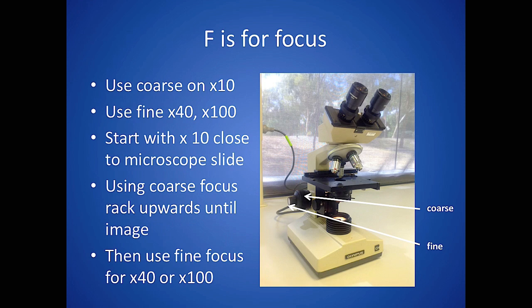F is for focus. It's important that you use the two knobs correctly. When you start off with the 10x objective, only use the coarse knob to roughly find your image. Rack the 10x objective down as far as it'll go — it won't smash the slide — then use the coarse focus to raise the objective until you see the image. You can use the fine focus a little to sharpen that image, and when you swing in the 40x or 100x, it'll almost be in focus already.